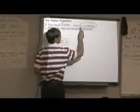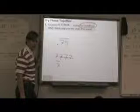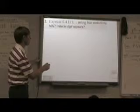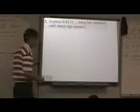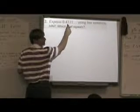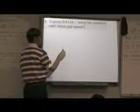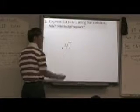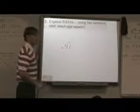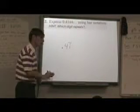Express 0.41111 using bar notation. Now we need the 4 and the 1, don't we? But what's repeating? These ones, aren't they? So it's just 0.41 with a bar over just the one, because only the one is repeating.